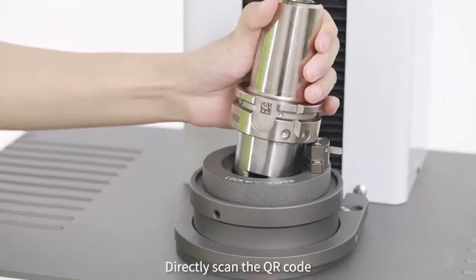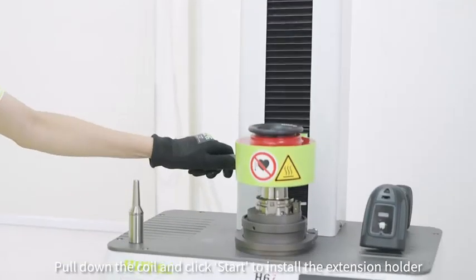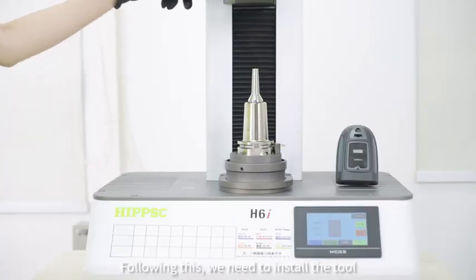Directly scan the QR code and the holder's model number will appear on the screen. Pull down the coil and click start to install the extension holder. Following this, we need to install the tube.